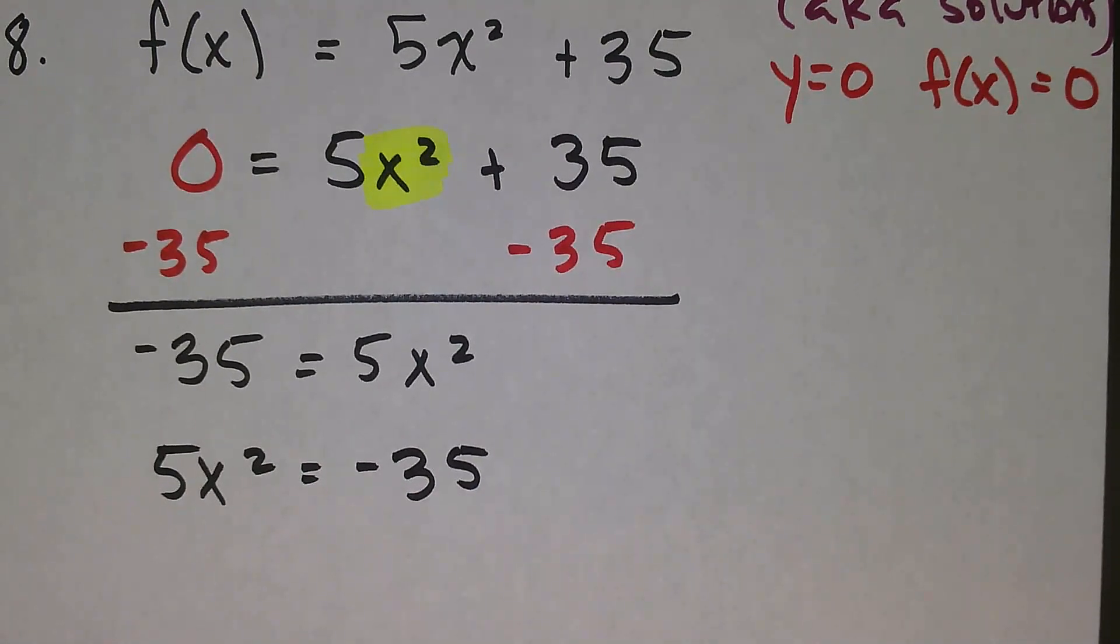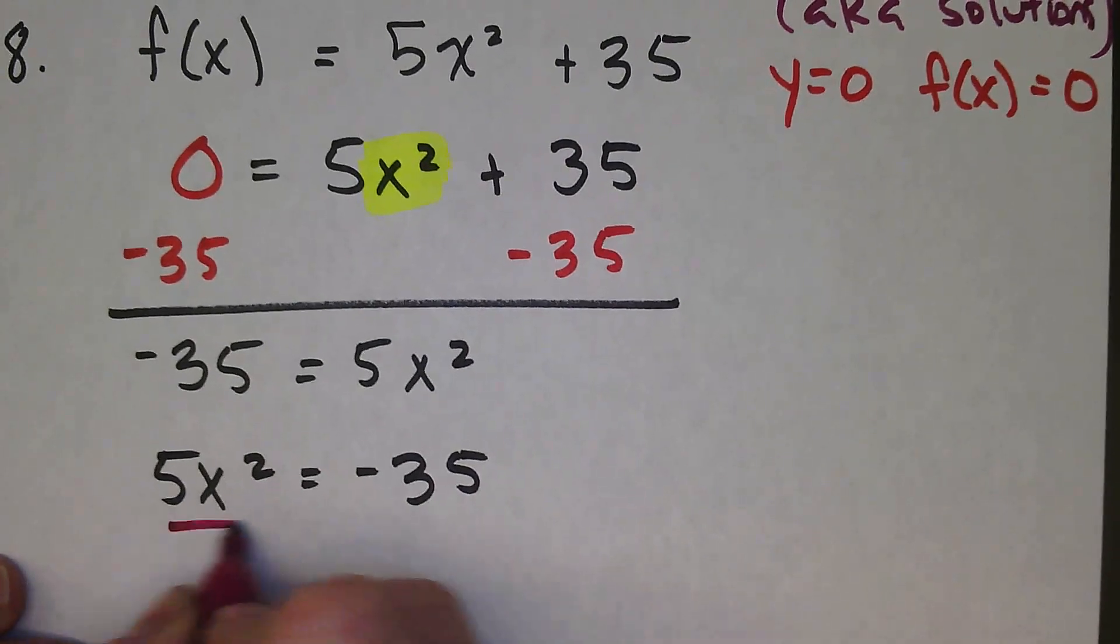You are always allowed to flip-flop the left and right sides. From here, I want to get x² by itself, so I'm going to divide by 5.